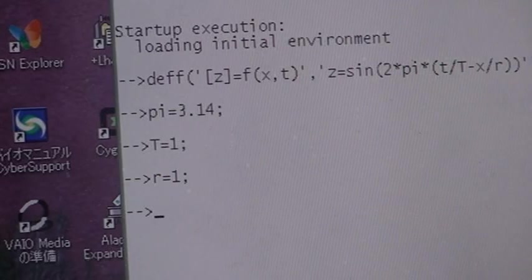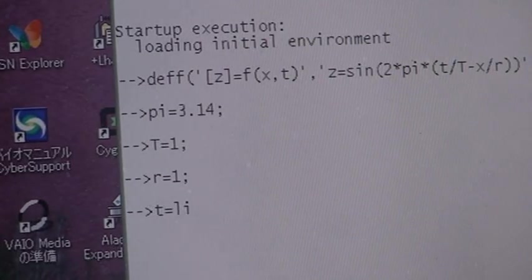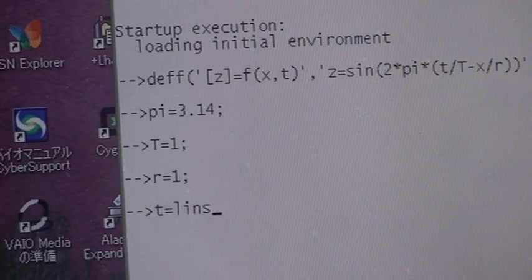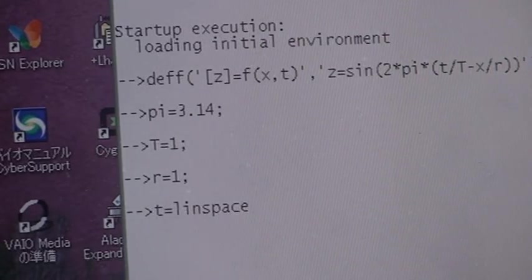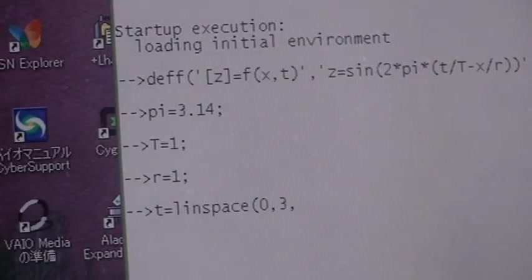So t equals range space times 0, 2, 3 and step 30.